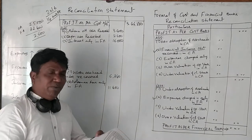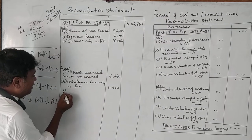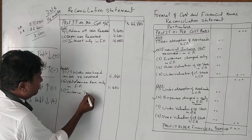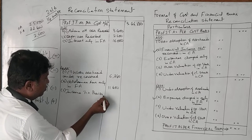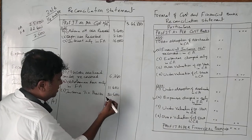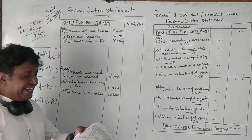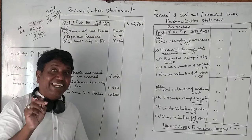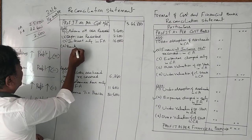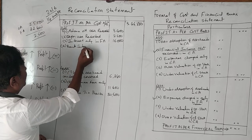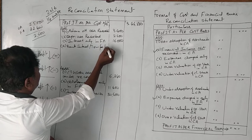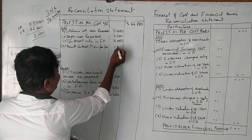Next is income tax provision — as covered in the previous problem. Income tax provision only in FA is 80,600 rupees. Bank interest and transfer fees are credited, meaning they are income. Bank interest and transfer fee: 1,500 rupees.